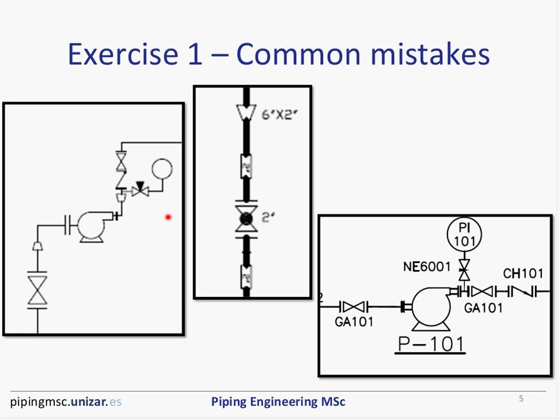It's true that when you have a P&ID with many lines to represent and it is very crowded with symbols, you necessarily have to make turns. But you have to minimize them. In the P&ID you developed for exercise one, I believe you had plenty of space, so you should work on minimizing those turns.